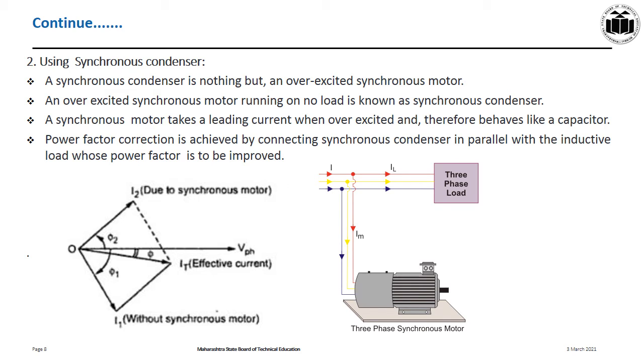Power factor correction is achieved by connecting the synchronous condenser in parallel with the inductive load whose power factor is to be improved. In the diagram, we see that a synchronous motor is connected before the load, so it will draw leading current.